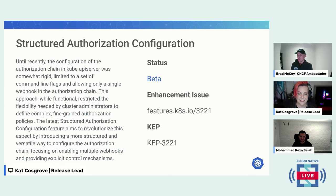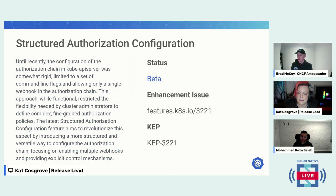The second part is structured authorization configuration. This enhancement enables Kubernetes admins to use a more structured config to define the authorization chain for the kube-apiserver, allowing multiple webhooks with well-defined parameters and enabling fine-grained control like explicit deny authorizers. It's also in beta.